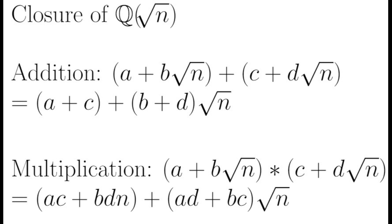Then to demonstrate closure, we need to show that the sum of two elements in Q root n are also in Q root n, and the products of any two elements in Q root n are also in Q root n, and this is shown here.